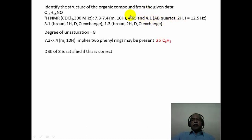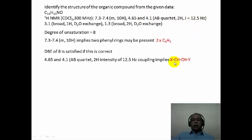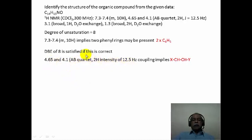Around 4.65 and 4.1, an AB quartet is seen with two hydrogens and a coupling constant of about 12.5 hertz. This should only correspond to a disubstituted system where one more substituent satisfies the valence of these carbons, and the two phenyl groups are probably the additional substituents. This particular pattern recognition of an AB quartet with two hydrogen intensity in this chemical shift region corresponds to this kind of substitution pattern, which one should recognize in order to solve this problem.